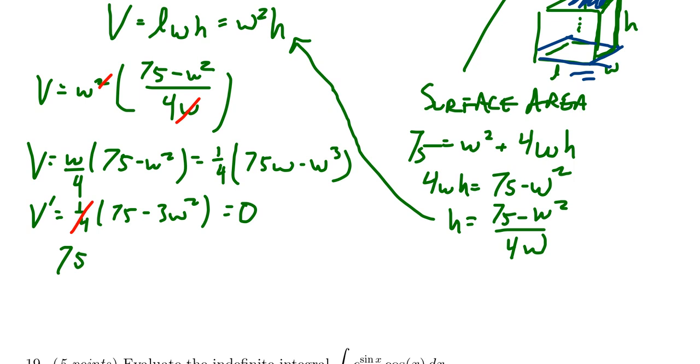So we have 75 minus 3w squared. Add 3w squared to both sides, you get 75 equals 3w squared. Divide both sides by three, you're going to get w squared equals 25, and then take the square root, you get w equals 5.